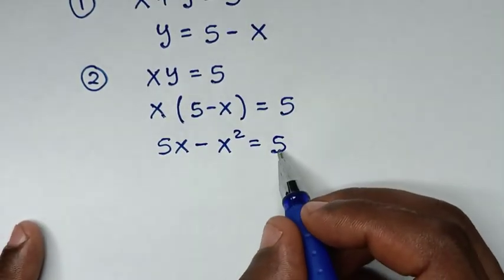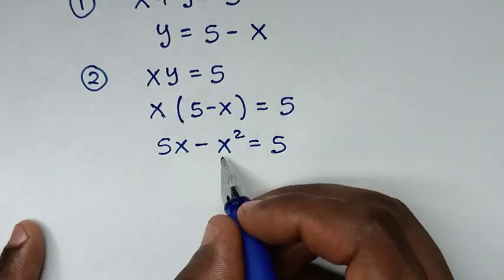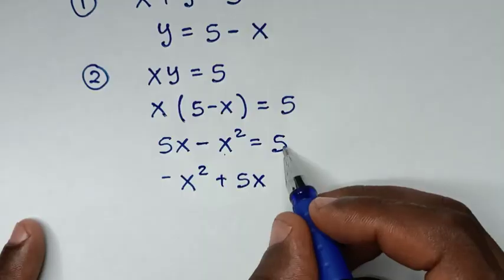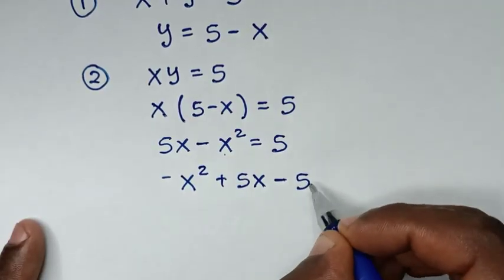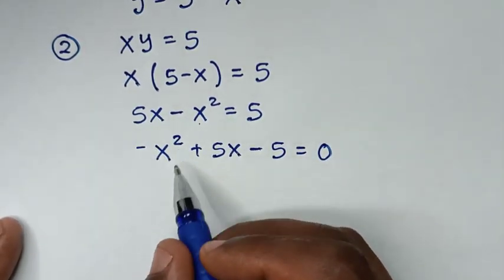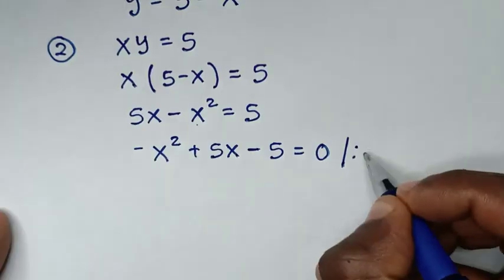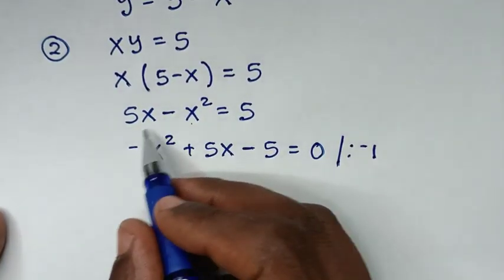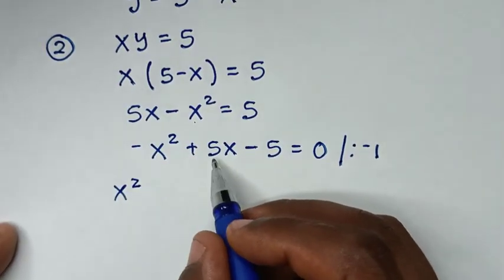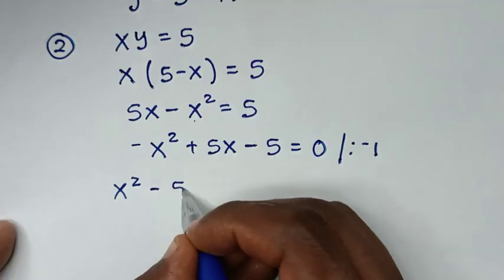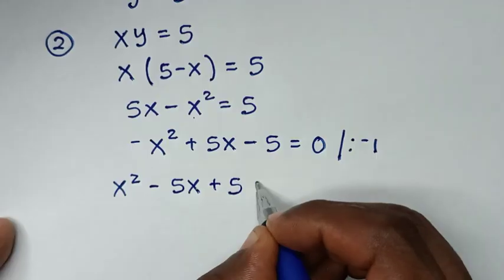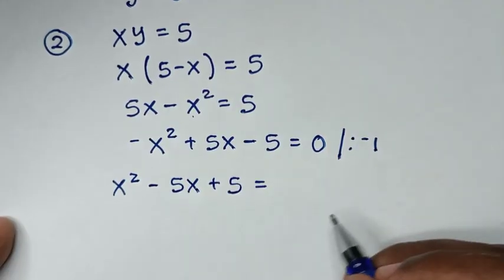We take 5 to the left side to get negative x squared plus 5x minus 5 equals 0. Then we divide the whole equation by negative 1, giving us x squared minus 5x plus 5 equals 0.